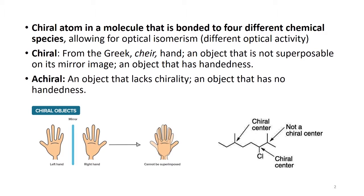The word chiral itself means non-superimposable. If you looked at your hand in the mirror, you could see that it cannot be superimposed on each other. Like if you looked at a word in the mirror, you usually see it as a flipped photo of the word. This comes because of the non-superimposable image that occurs in the mirror.